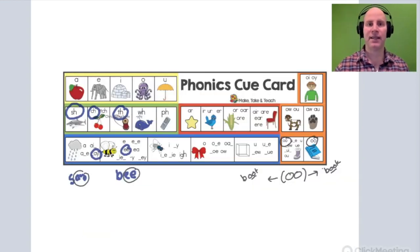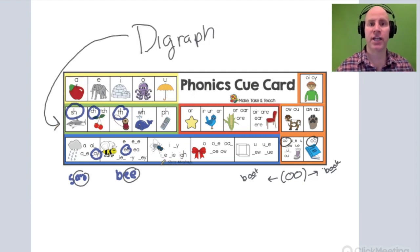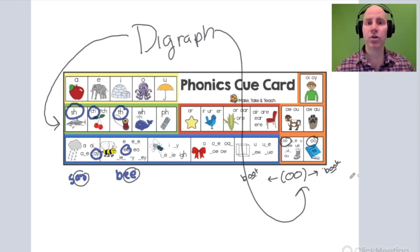A digraph is anything where there's two things that make one sound. We have consonant digraphs, like the SH in shark. And we have vowel digraphs, like the oo in book. Two vowels that make one sound is a vowel digraph. Two consonants that make one sound is a consonant digraph.